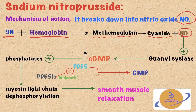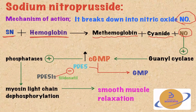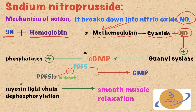Any compound that contains nitrogen in it will result in methemoglobinemia, because it combines with hemoglobin and converts the ferrous iron into ferric iron. That's why the excessive use of sodium nitroprusside will result in methemoglobinemia. Also, the excessive use of sodium nitroprusside will result in the increased production of cyanide and cyanide poisoning.